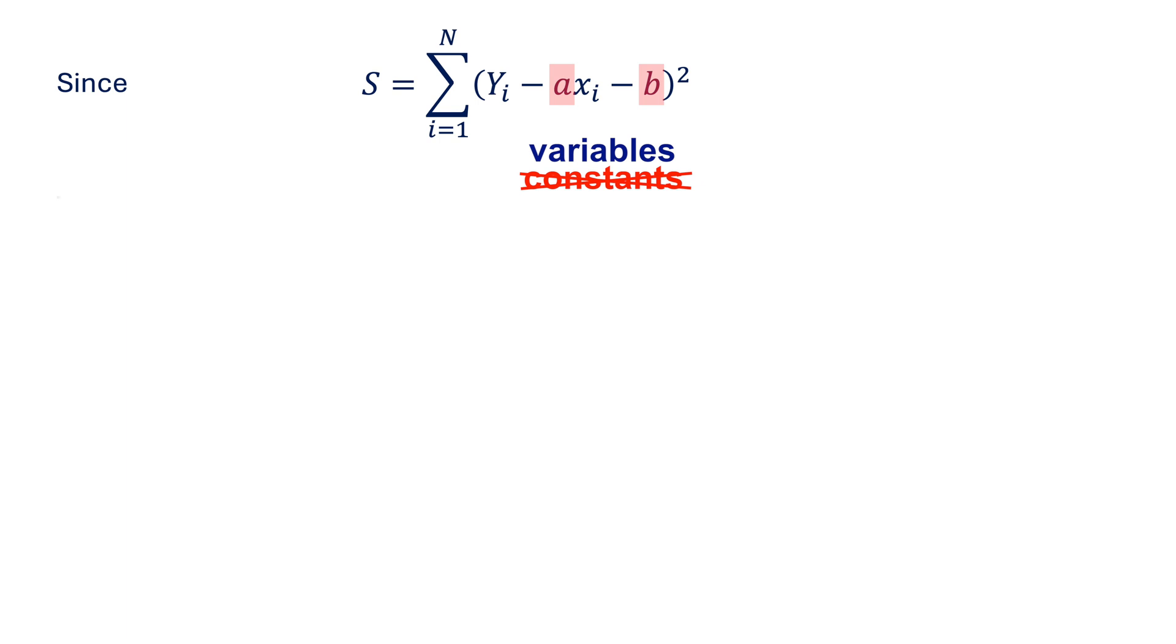So keep this in mind to the end of derivations. Least squares method is based on making total magnitudes of errors minimum. And we can find the minimum by having the first derivative of S with respect to each variable equal to 0.